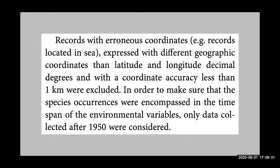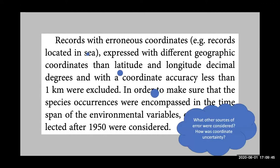Another example: 'Records with erroneous coordinates, expressed with different geographic coordinates than latitude/longitude decimal degrees, or with a coordinate accuracy of less than one kilometer were excluded.' What other sources of error were considered? How was coordinate uncertainty summarized or calculated so as to decide what is less accurate than one kilometer?